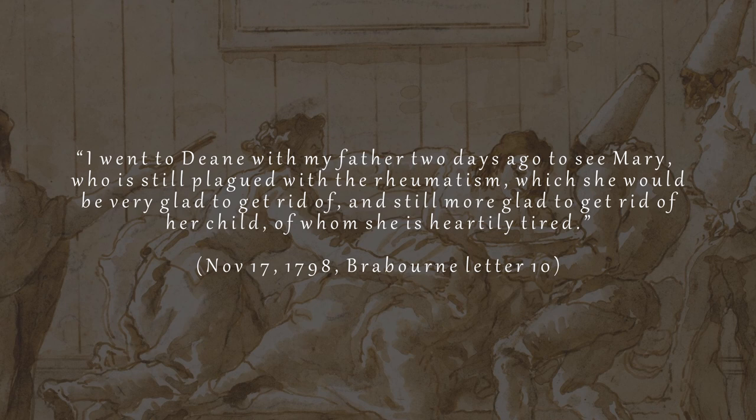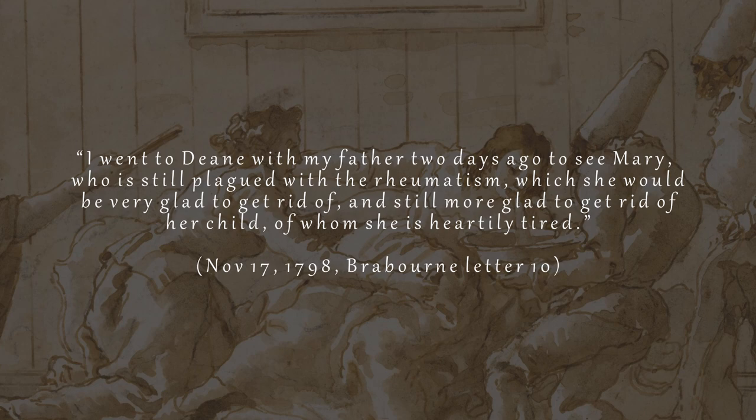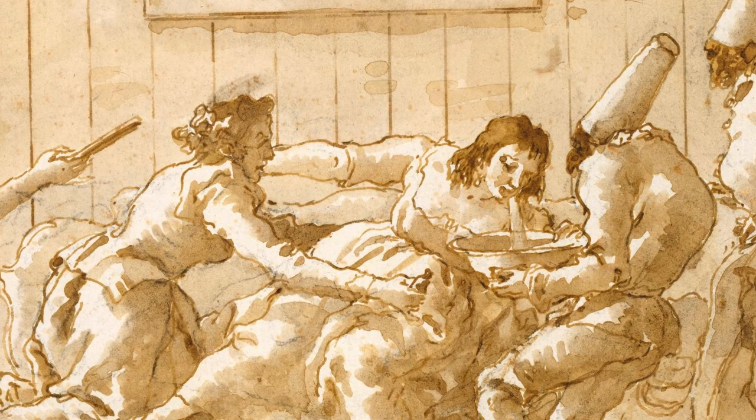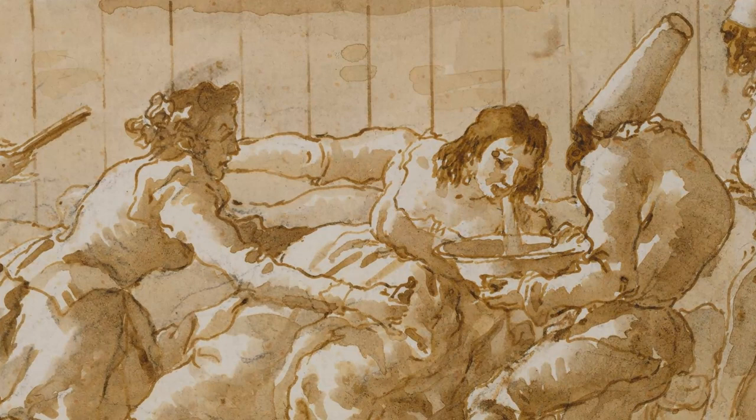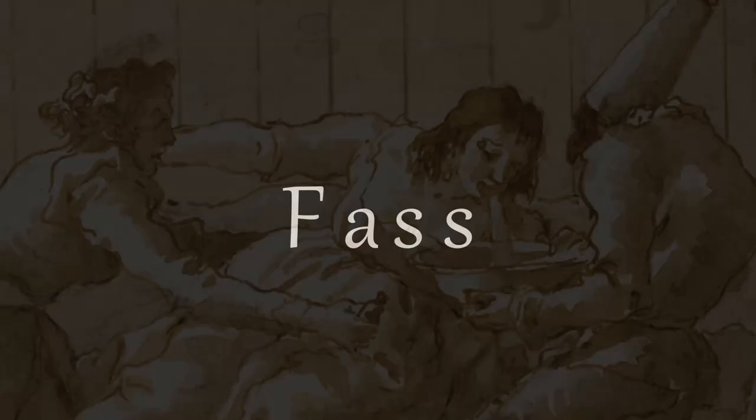In a letter to Cass about Mrs. Frank Austen, who was only a couple of months along, Jane is more explicit: "F.A. seldom either looks or appears quite well. Little embryo is troublesome, I suppose." Some of the symptoms of pregnancy she gathered from her sisters-in-law included rheumatism and the general feeling of being sick of being pregnant. While living with her sister-in-law Mrs. Frank Austen in Southampton, she witnessed fainting spells during pregnancy: "Mrs. F.A. has had one fainting fit lately. It came on as usual after eating a hearty dinner, but did not last long."